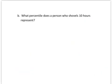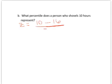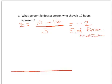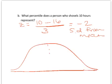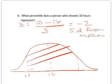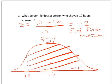Now let's say: what percentile does a person who shovels 10 hours represent? Same thing — let's see how many standard deviations away this is. Since it's below the mean, it's going to come out negative. We've got (10 minus 16) over 3, which gives us negative 2. So we're two standard deviations to the left of the mean. Let's draw it: here's our mean of 16, and we're down here at 10, two standard deviations below. The empirical rule tells me that 95% of my data falls within two standard deviations.